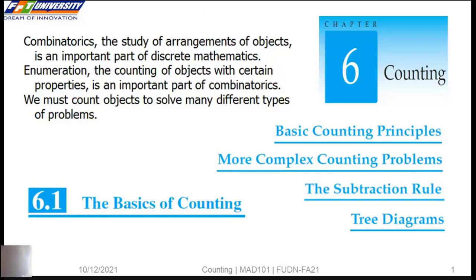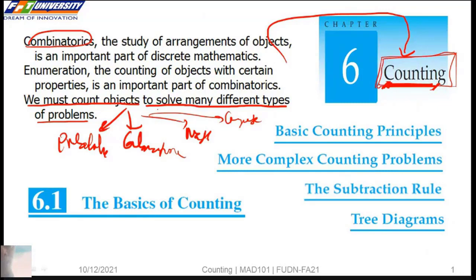To enumerate, to count objects is an important part of combinatorics. To solve many different types of problems, we have to count objects. For example, we count telephone numbers, internet addresses, passwords on the system. In this chapter, we assign the counting. The counting arises throughout mathematics and computer science. Here we assign the counting technique. First, we assign the basic principle of counting.